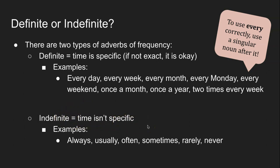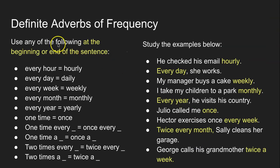We also have the indefinite adverbs of frequency. The indefinite adverbs don't show specific time — the time is harder to understand, it's not exact. For example, indefinite adverbs are: always, usually, often, sometimes, never. When we hear these adverbs, we don't know exactly when the action happens. That is why they are called indefinite adverbs. Here are examples of definite adverbs and how to use them in sentences.